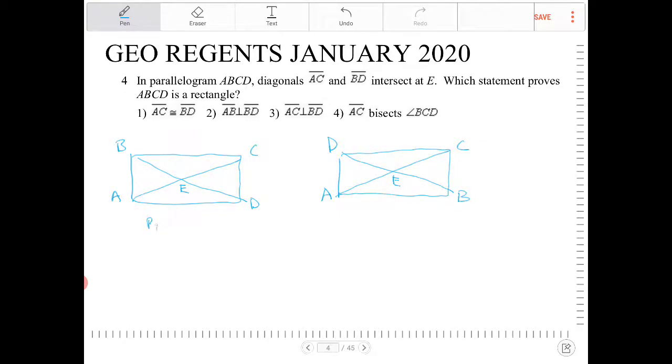Well, if a parallelogram has any one of the following properties, then the parallelogram is a rectangle.